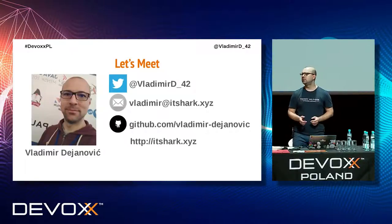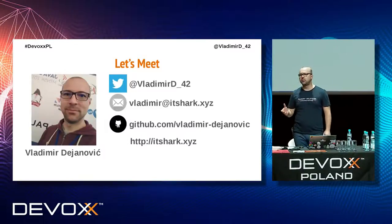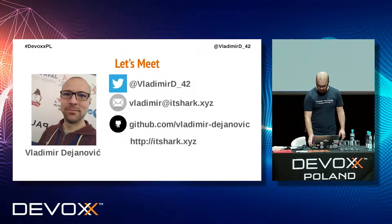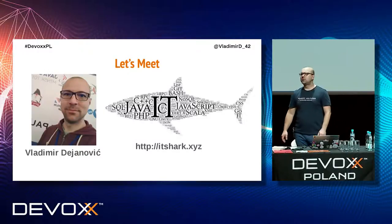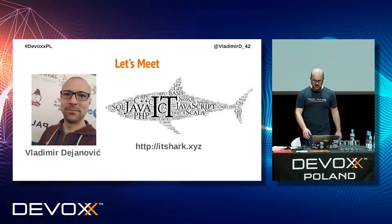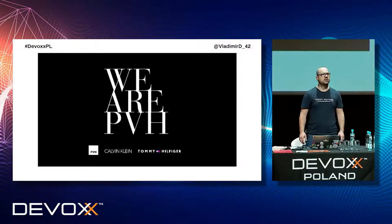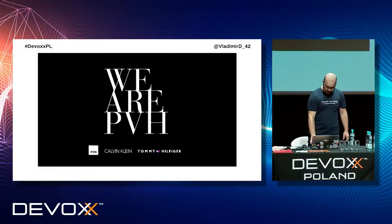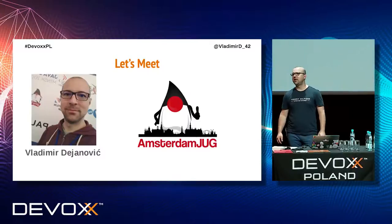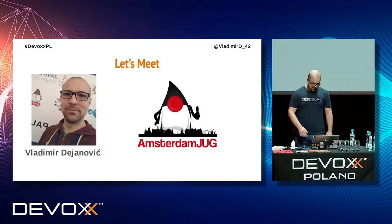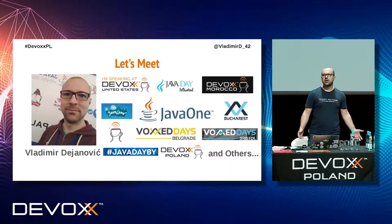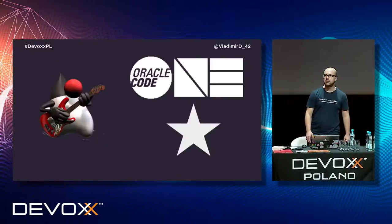Let me introduce myself. My name is Vladimir Dejanovic. This is my Twitter, my mail, my blog, my GitHub account, if you want to contact me online or follow me. I've been part of professional IT since 2006 and worked on all kinds of projects and technologies over the years. My day job is Senior Director of B2C Technology at PVH - a fashion tech company behind brands such as Tommy Hilfiger and Calvin Klein. My night job is founder and leader of the Amsterdam Java User Group. Besides this, I give talks at conferences like this one. I'm also a Java Rockstar and Code Star.